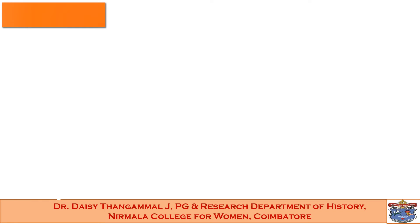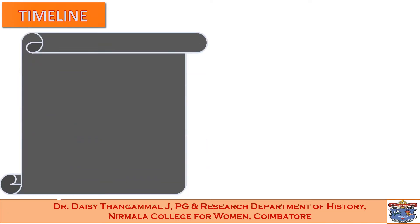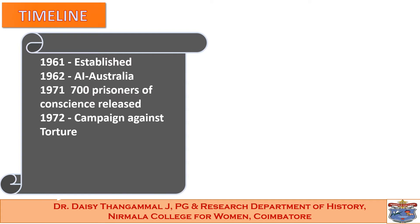A few key milestones in the timeline of Amnesty International: In 1961, Amnesty International was established. In 1962, an Amnesty International group was started in Australia. In 1971, 700 prisoners of conscience were released. In 1972, Amnesty International launched a worldwide campaign for the abolition of torture. In 1977, the Nobel Peace Prize was awarded to Amnesty International for its worldwide respect of human rights.